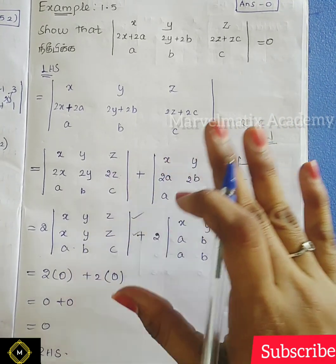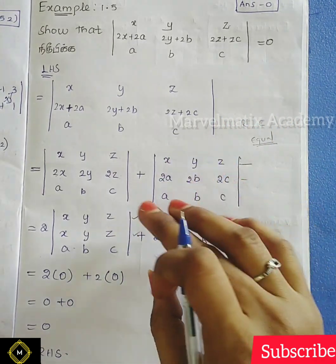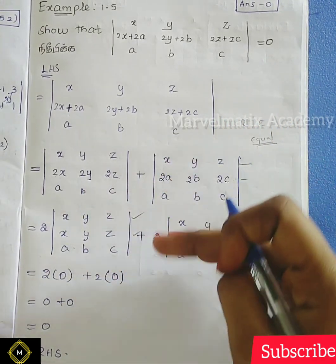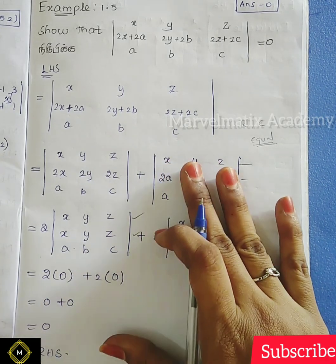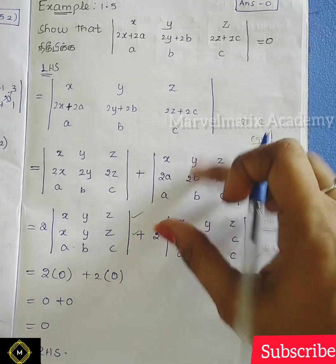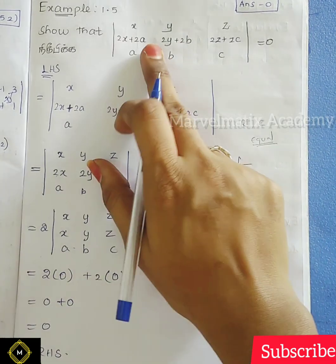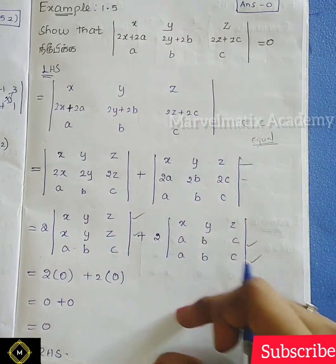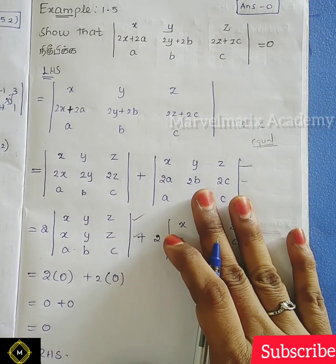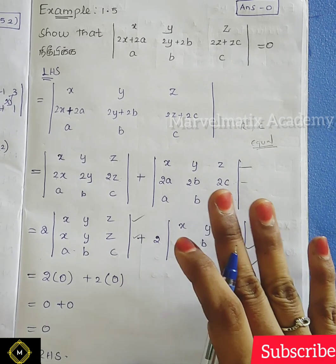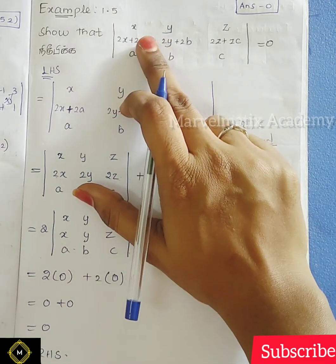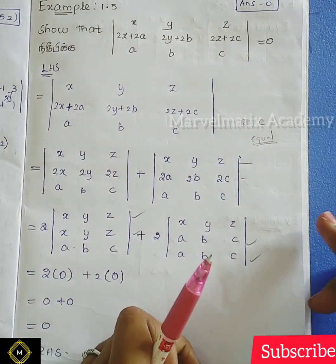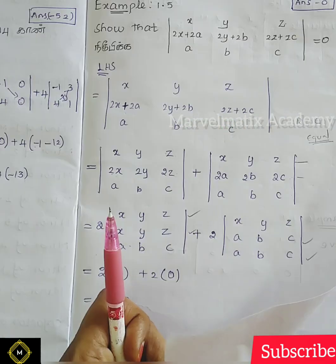That's what we have done. So we have the properties — addition properties are like this. Matrices are like this. Finally, you have the term equal to 0, hence the proof. So the problem is over. This is Example 1.5.